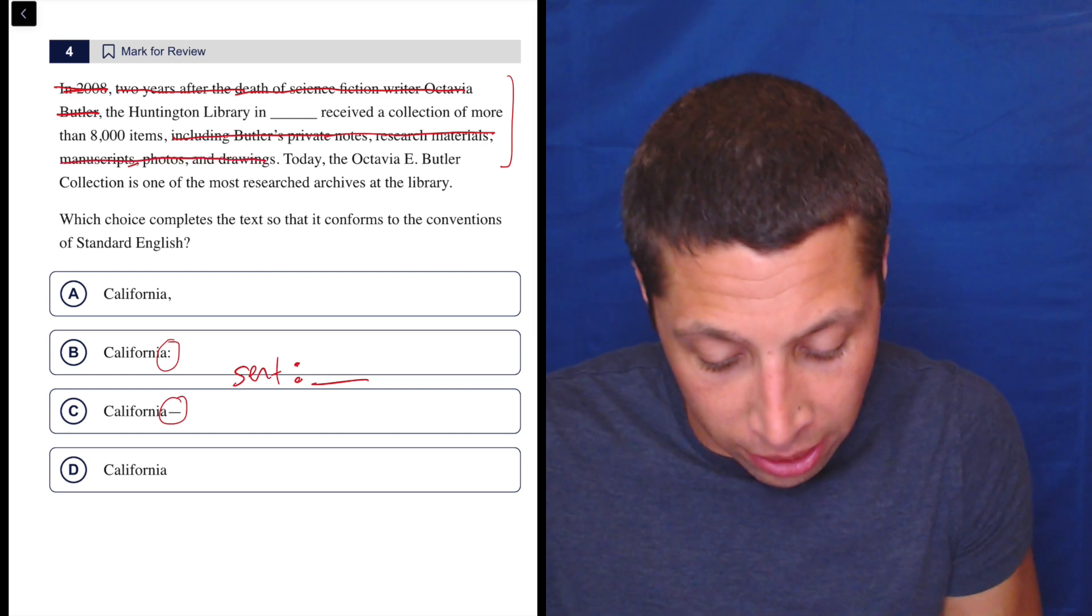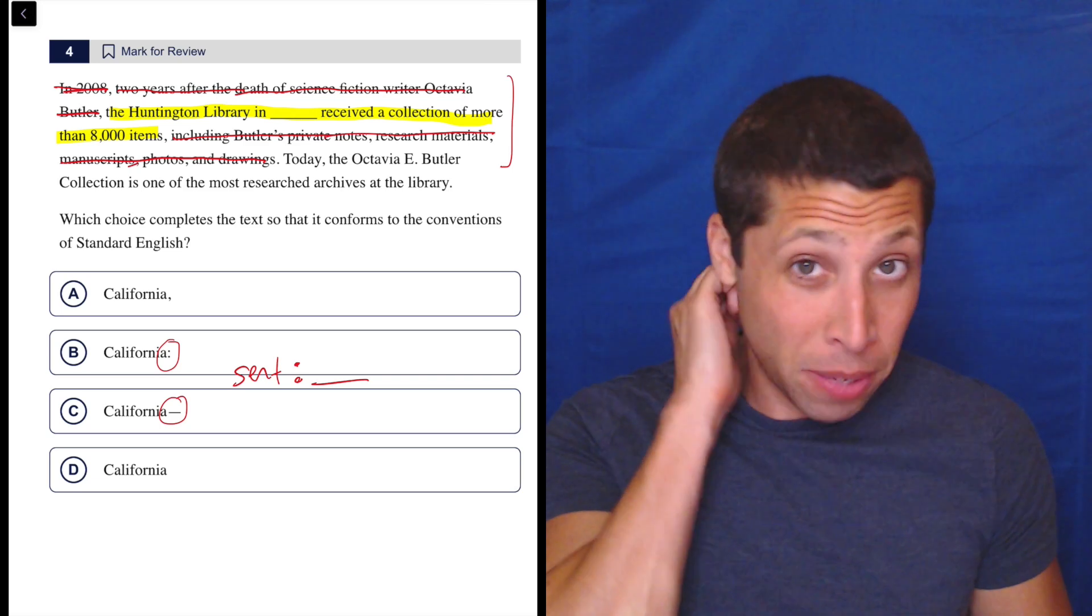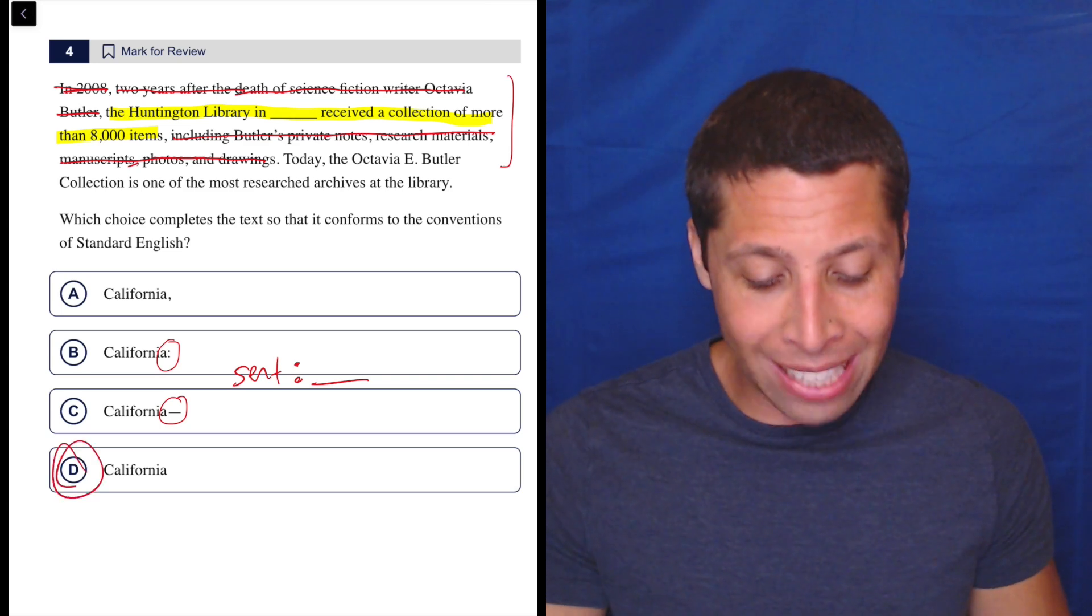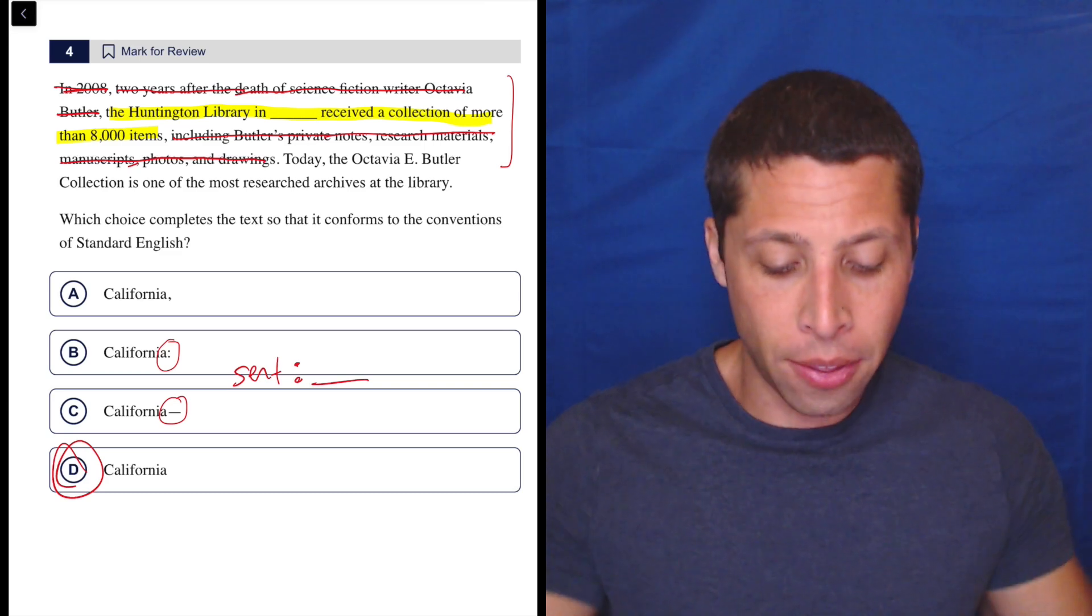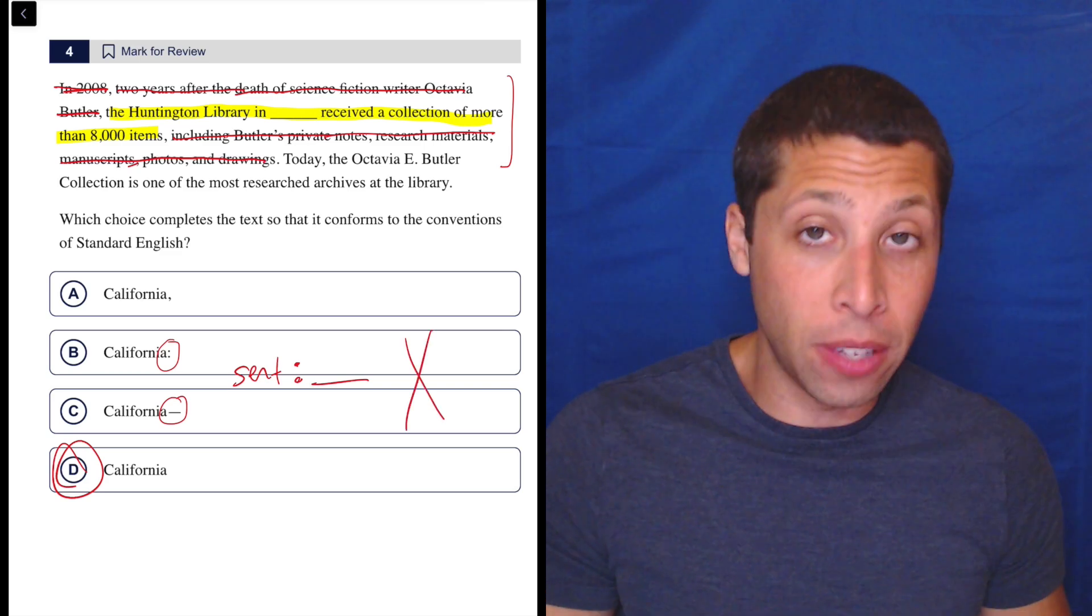So really our sentence is just this. The Huntington Library in California received a collection of more than 8,000 items. I don't know. To me, I hear that that just is a continuous thought. So I don't need any punctuation. It's certainly not a sentence, right? The Huntington Library in California. Can't stop there. So that does get rid of both of these choices.